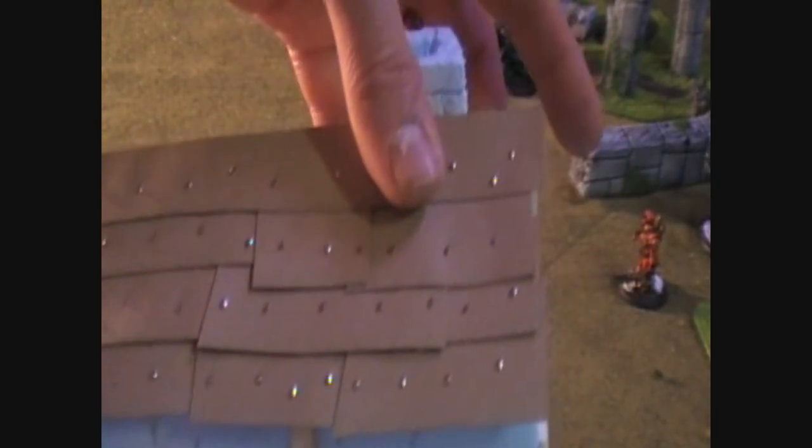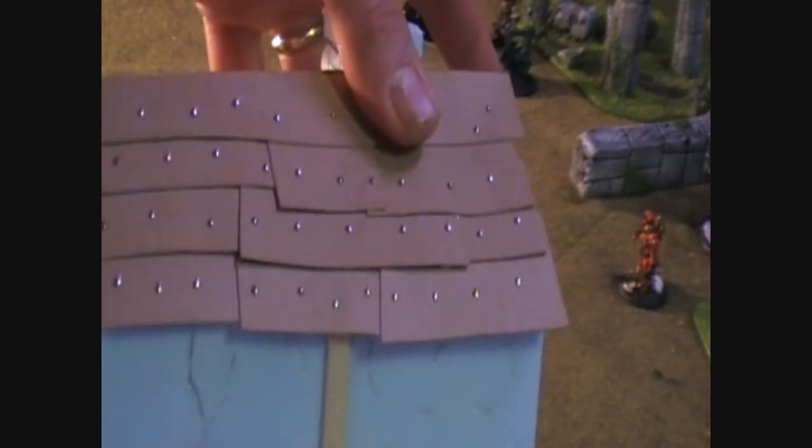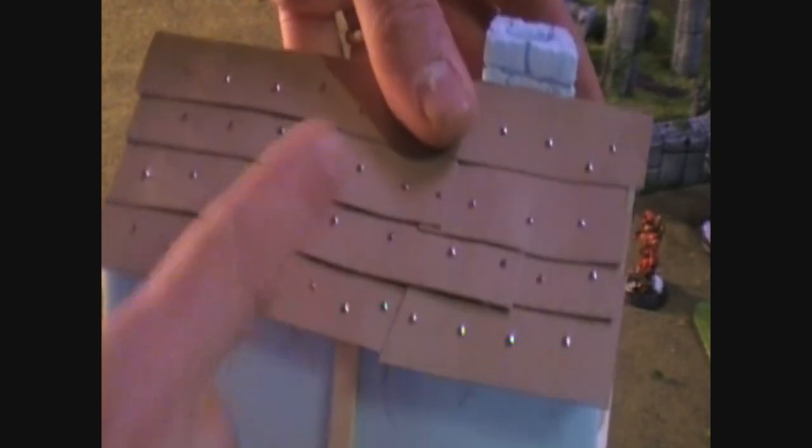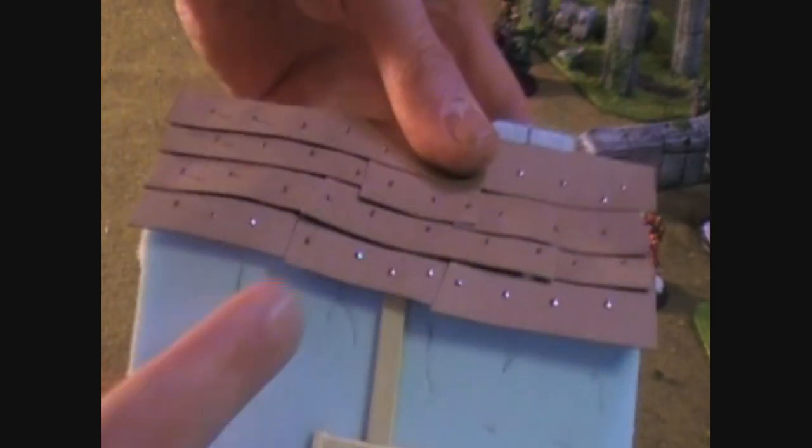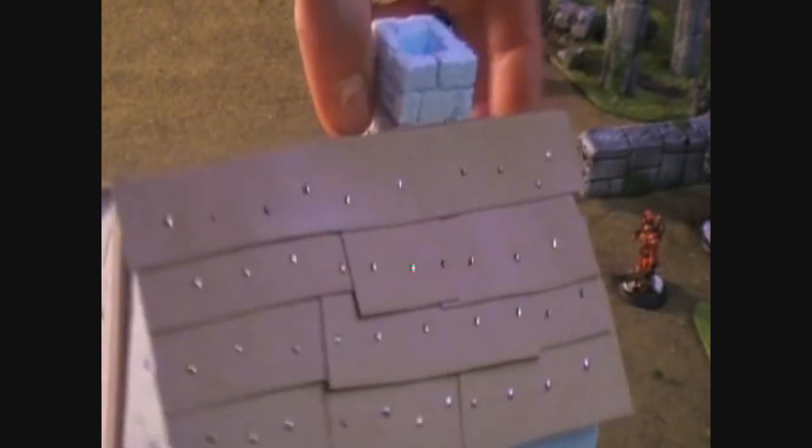Now you'll notice that earlier we had this kind of divot in the roof when I cut the styrofoam and I told you it wouldn't be a problem. And the reason I said that is because what we've got now because there's an uneven cut, it's kind of a drooping roof, which actually is a nice little effect for something in the Iron Kingdoms to have that imperfection and the wear and tear of time. So that's our roof ready to go.